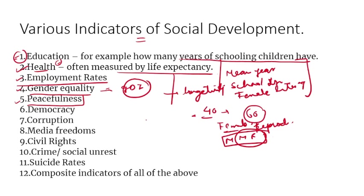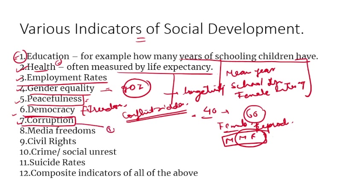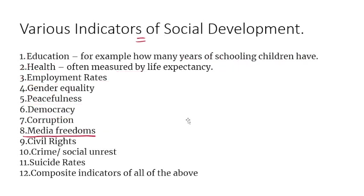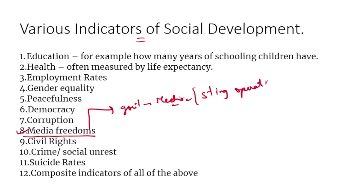Peacefulness refers to how peaceful a country's environment is — some countries are conflict-ridden with ongoing wars and violent clashes. Democracy indicators measure how much freedom citizens are given. Absence of corruption is an important indicator that features in the World Happiness Index. Media freedom — how freely media can report against the ruling government or conduct sting operations — is also an indicator of social development.